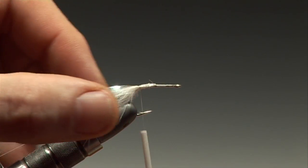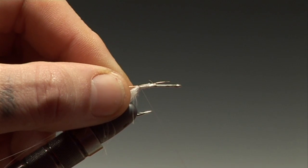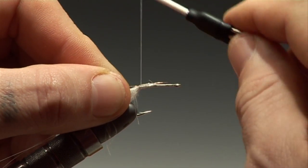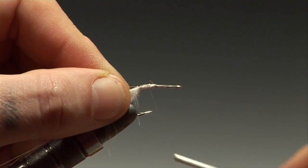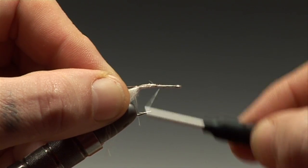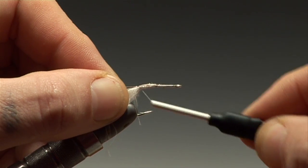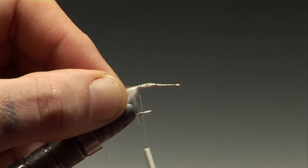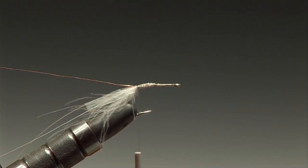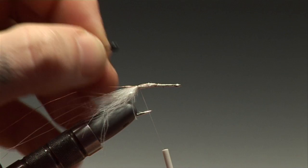It's important that this lies flat on the hook shank. Now a length of medium copper wire. This will be the rib and the segmenting of the shrimp. Secure this well in and return the tying thread to the base of the beard.